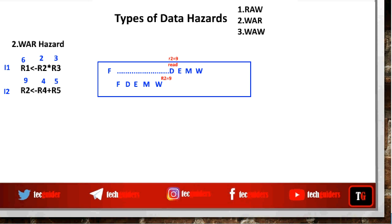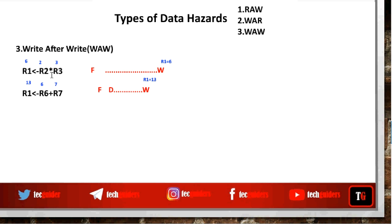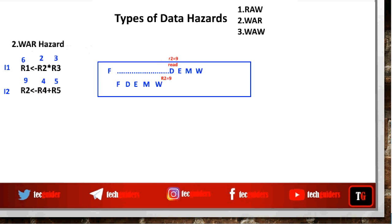But in write after read and write after write data hazards, the programmer does not intend any kind of data flow between the instructions. Here we need to compute the sum of r4 and r5 and store it in some register, but that register name happened to be the same name used by a previous instruction. Similarly, the name of the storage location used in both cases happened to be the same, and this name conflict has led to the dependency and hence the hazard. Due to this name dependency, these two dependencies are called false dependencies — there is no flow dependency.